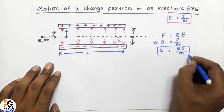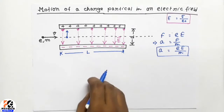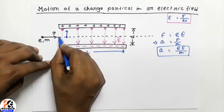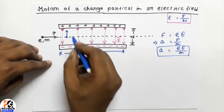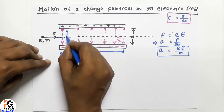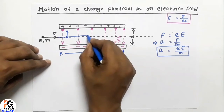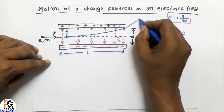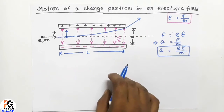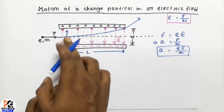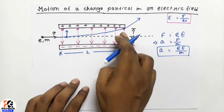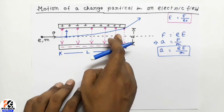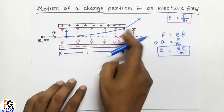Due to this acceleration, the path of the electron will be deviated from the actual path, and the deviation will start just after it enters the electric field. Its path will curve as shown. This optimum velocity is the velocity for which the electron just manages to exit from the electric field, that is, just exit from between the plates.